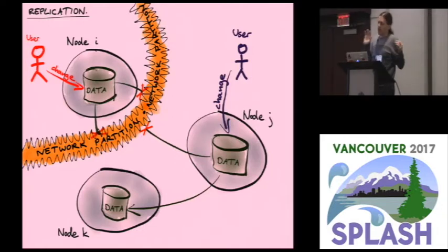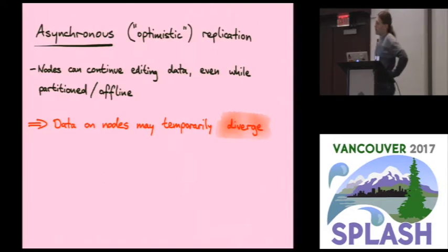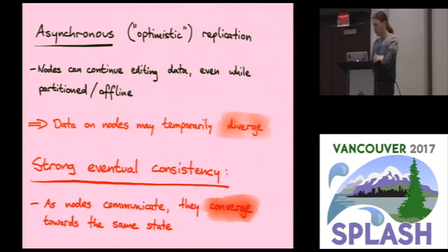In that case, we can't rely on synchronous coordination over the network, waiting for messages to pass over the network in order to make some change. We have to allow each node to change data independently, even while it's offline. In that kind of system, an inevitable consequence is that the data on different nodes may diverge, because they might make changes without knowing about each other.